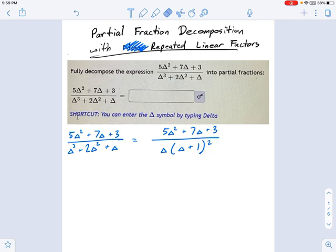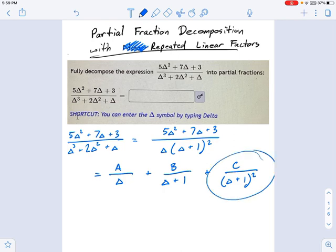Here's the big difference, and once we get past this, the techniques are going to be the same from there on. What you need to do is turn this into three fractions like before. One of them is A over delta, that's no surprise. One of them is B over delta plus 1, the other factor, that's no surprise. Here's the difference: the third one is going to be delta plus 1 squared. Whenever you have a repeating factor, your job is to add another whole fraction here with that repeating factor squared.